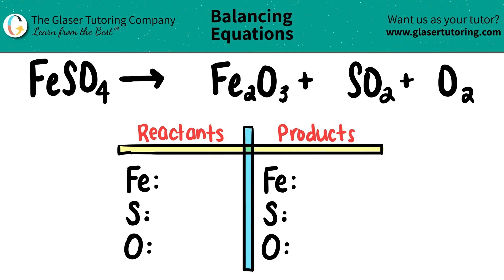Today, we are going to be balancing the equation of FeSO4, which will yield Fe2O3 plus SO2 plus O2. I already wrote down our little balancing chart, as well as the elements that I see that are on both the left and the right side.